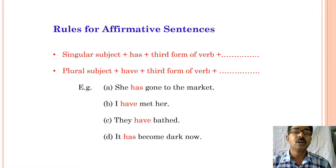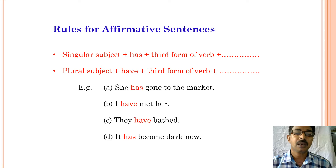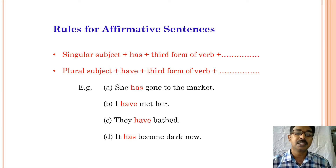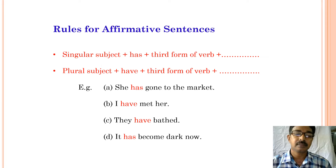Now let us see the rules for framing affirmative sentences. The structure is: singular subject plus has plus third form of the verb plus object, or plural subject plus have plus third form of the verb plus object. The past participle form of the verb is called the third form. Examples: she has gone to the market, I have met him, they have bathed, it has become dark.